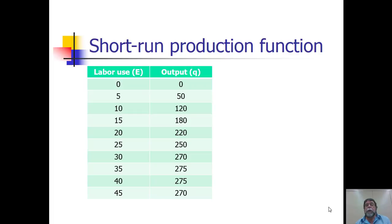In this table, we show how output varies as we change the number of hours of labor. When there's no labor being used, there's no output. With five hours of labor, we end up with 50 units of output, and so on as we move down the table.